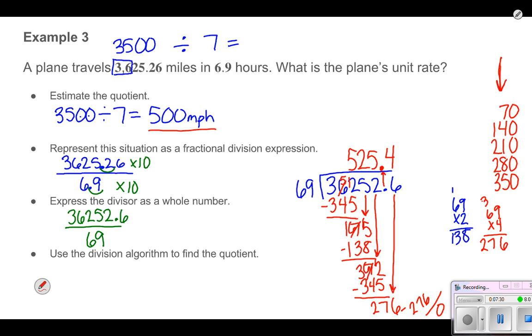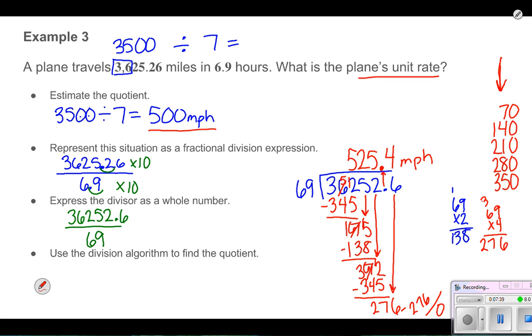I've got my final answer all set: 525.4 miles per hour is the plane's unit rate, and it matches my estimate. So those are the steps to go through to divide when you have a decimal in your divisor.